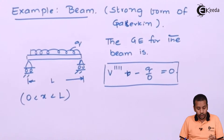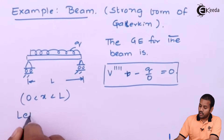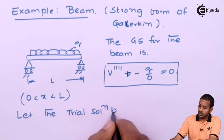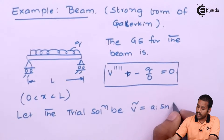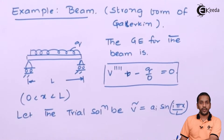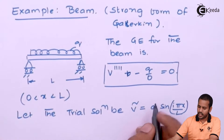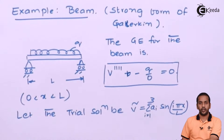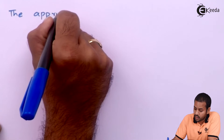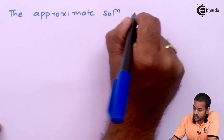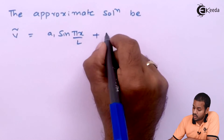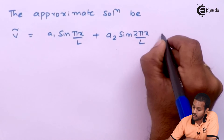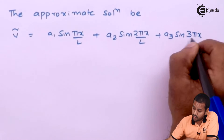The first step is to assume a trial solution. Let the trial solution be Ṽ = Σ Aᵢ sin(iπx/L), where i varies from 1 to n. Let us take three terms, i = 1 to 3. Expanding: Ṽ = A₁ sin(πx/L) + A₂ sin(2πx/L) + A₃ sin(3πx/L).